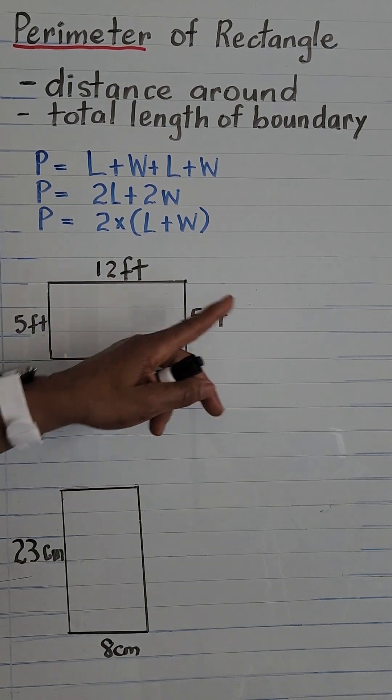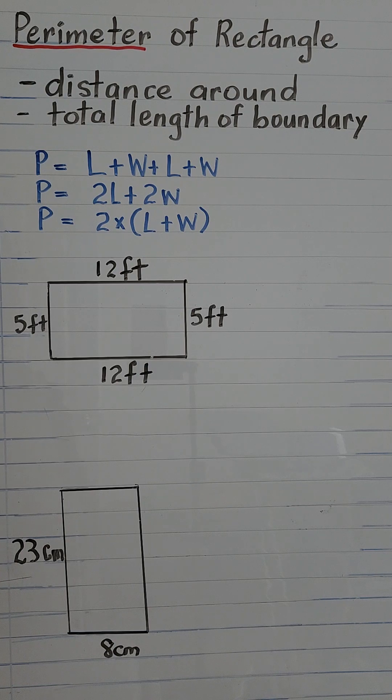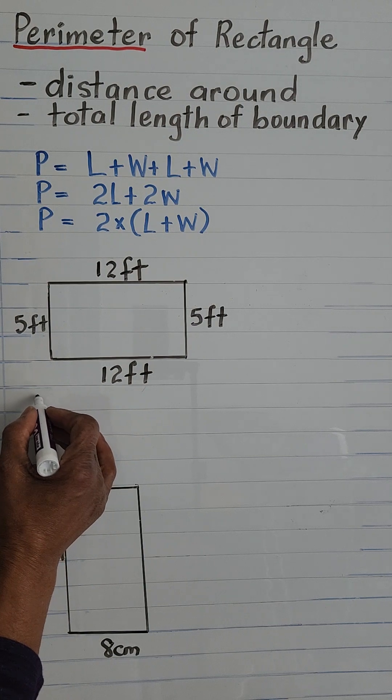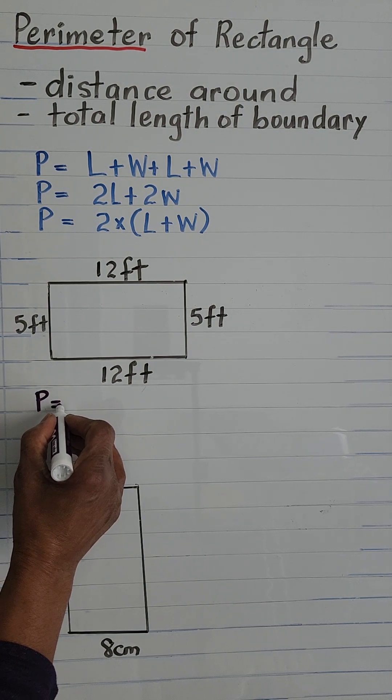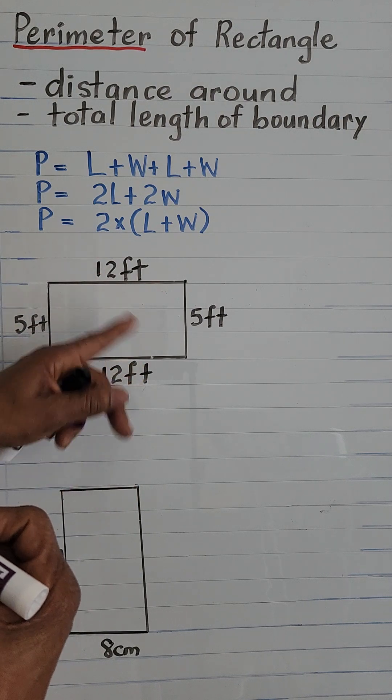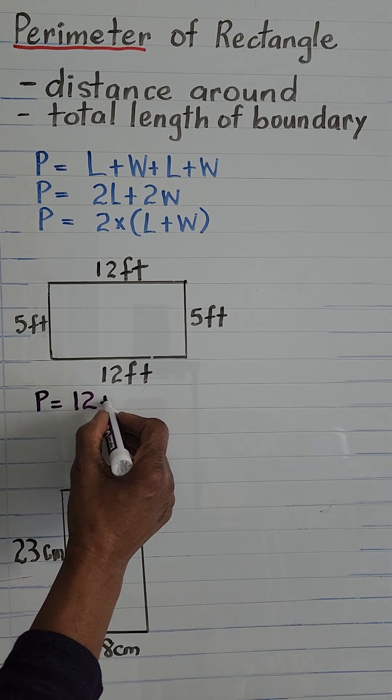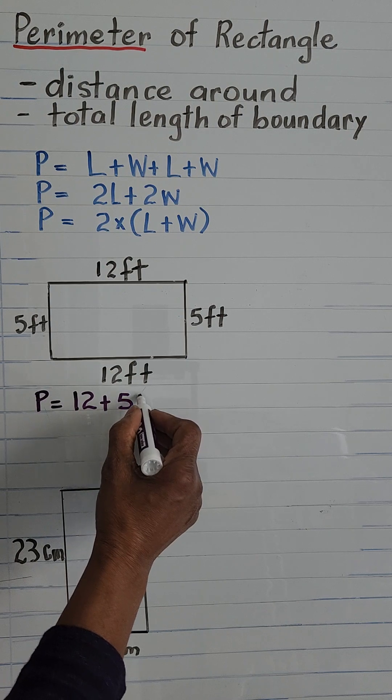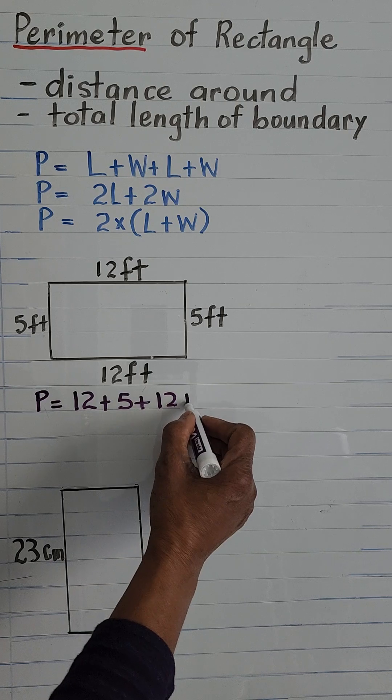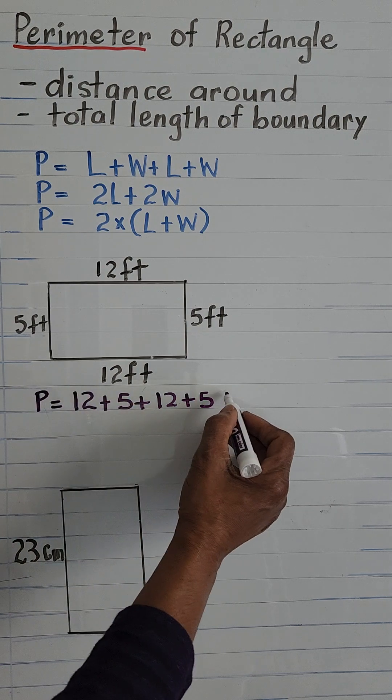We're going to try to use the three formulas and see how we get the same answer. So first we can say P equals length plus width plus length plus width. Remember, unless we're told otherwise, we're going to take the longest side to be the length. So it will be 12 plus 5 plus 12 plus 5, and all of this is feet.